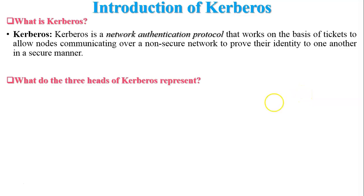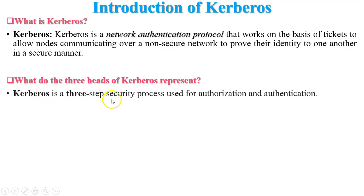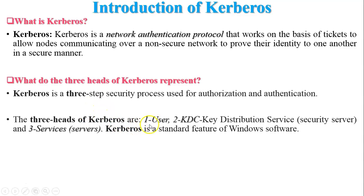What do the three heads of Kerberos represent? Kerberos is a three-step security process used for authorization and authentication. Authentication means the receiver should know that the message was sent by the original sender. The three heads of Kerberos are: first, the user or client machine; second, the Key Distribution Center (KDC); and third, the services from the server, i.e., accessing the server by the user.